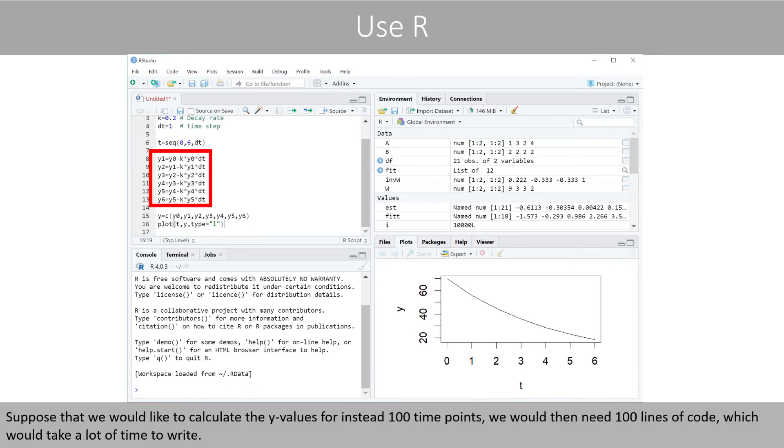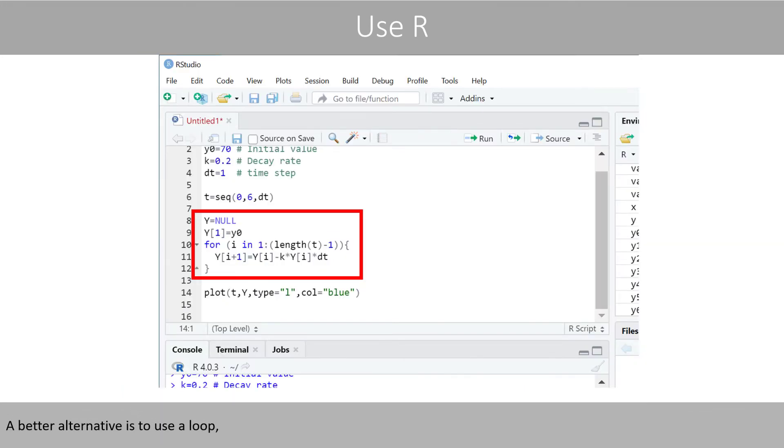Suppose that we like to calculate the y values for instead 100 time points. We will then need 100 lines of code, which would take a lot of time to write. A better alternative is to use a loop, where the code between the curly brackets will be repeated.